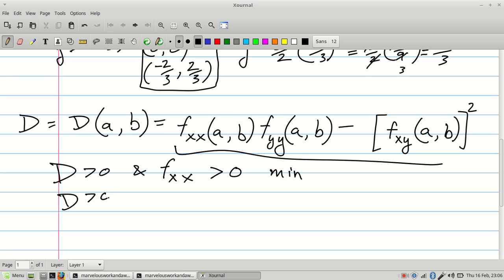If D is greater than 0 and Fxx is less than 0, then you've got a maximum. If D is less than 0, saddle point.